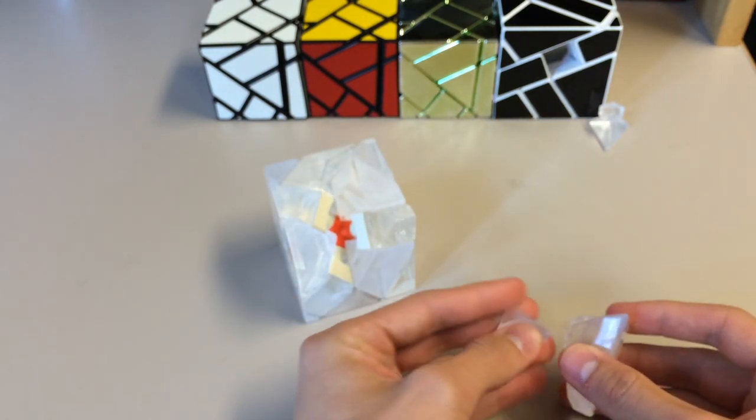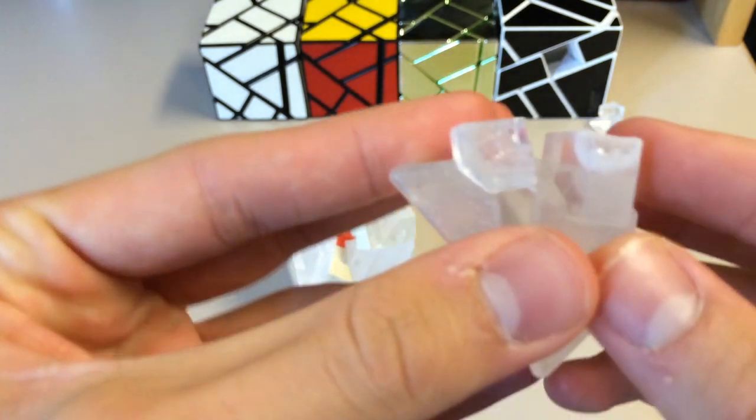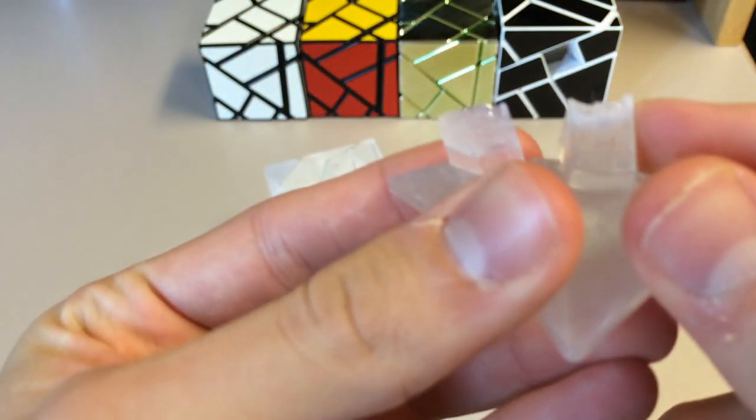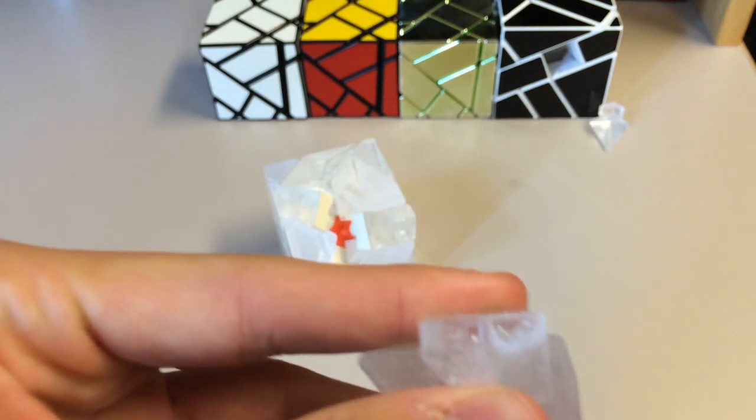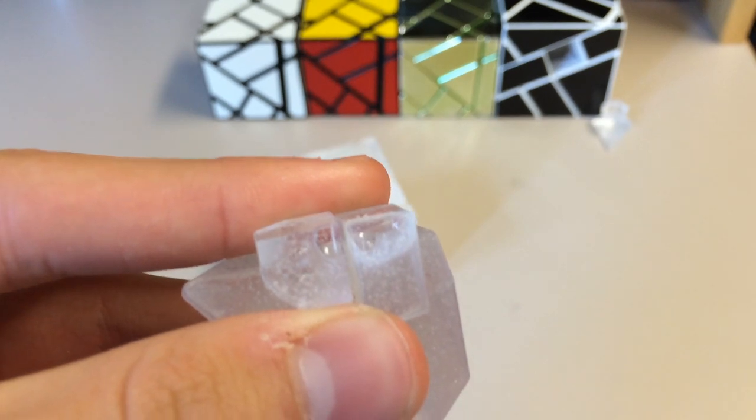Here are the pieces, just like you would expect from a normal ghost cube. Looks like something went wrong with the molding here.